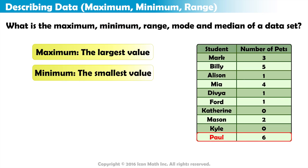Paul had the most number of pets with 6 pets, making the maximum value 6. Both Katherine and Kyle had the least number of pets with 0 pets, making the minimum value 0.